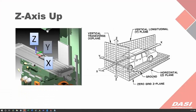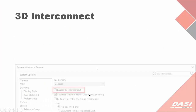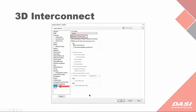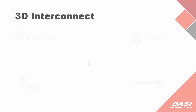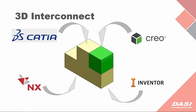Let's switch back to the presentation. That's the z-axis up tip. Next: 3D Interconnect. 3D Interconnect is an import option found under System Options > Import > Enable 3D Interconnect. This allows you to open and bring into SolidWorks 3D files created in other CAD packages like CATIA, Inventor, Pro/E, or NX.